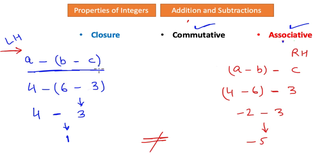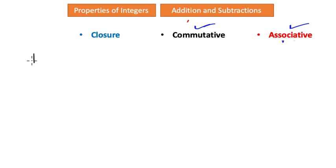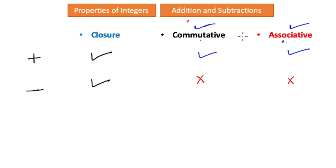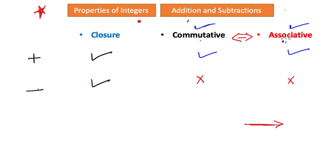In summary: under addition and subtraction, the closure law holds true for integers for both operations. The commutative and associative properties both hold true for addition, but neither applies to subtraction. There is a clear linkage between the commutative and associative laws. In our next tutorial, we will discuss these three properties under the operations of multiplication and division.